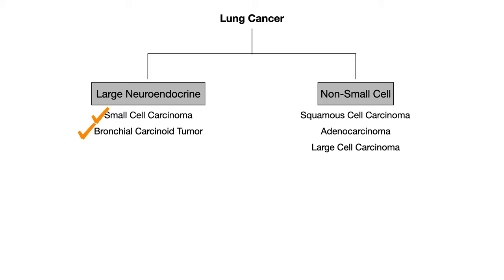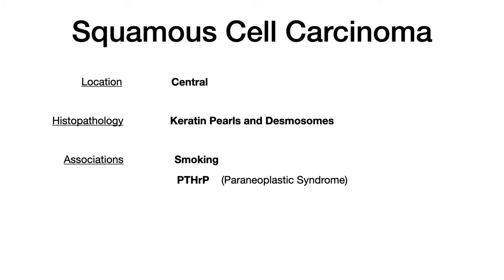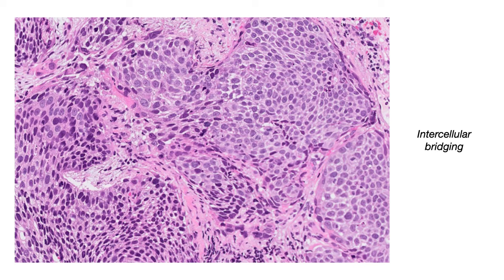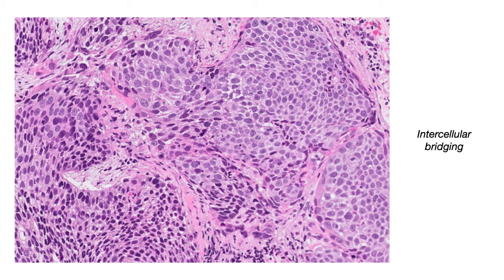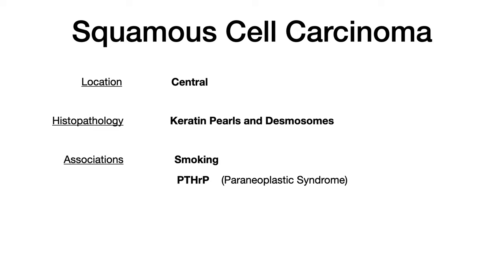Now we're going to switch gears and talk about non-small cell lung cancers, beginning with squamous cell carcinoma. Squamous cell carcinoma is located centrally. The high-yield histopathology you want to know are keratin pearls and desmosomes. Due to those desmosomes, you're going to see something called intercellular bridging. If you see the buzzword intercellular bridging or desmosomes, stop and pick squamous cell carcinoma. The highest-yield thing to know is that, like small cell carcinoma, it's also associated with a paraneoplastic syndrome — humoral hypercalcemia of malignancy, sometimes written as PTHrP.